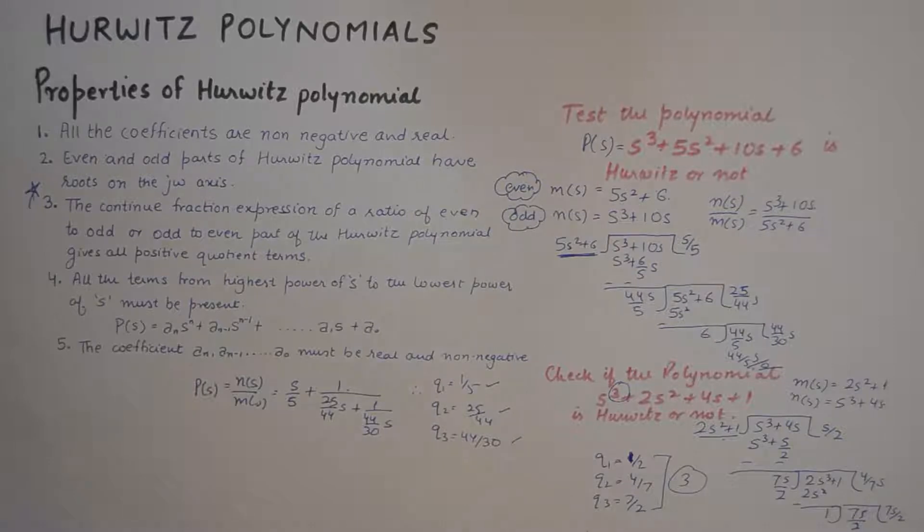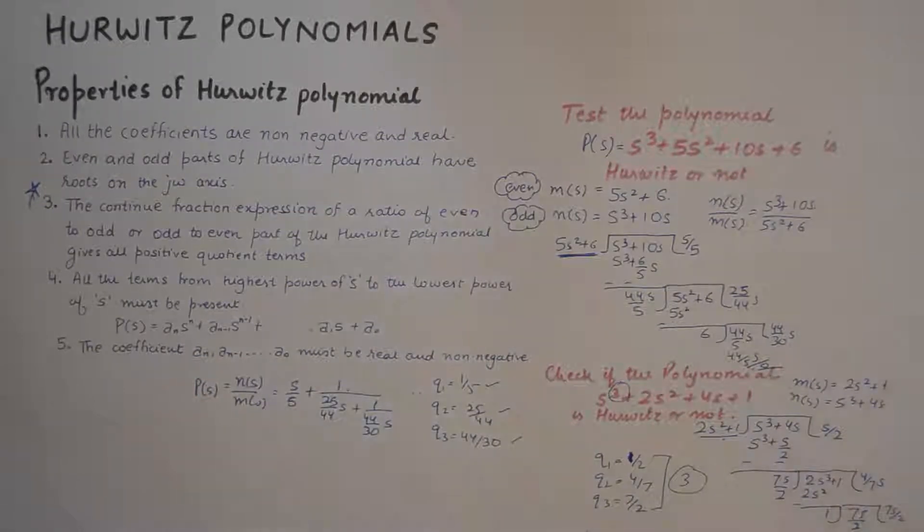So this is again a Hurwitz polynomial. And once we determine that the polynomial is a Hurwitz polynomial, we'll also say that the network function is realizable. And these were the properties of Hurwitz polynomial and the method of continued fraction expression. This method is also widely used to form Foster and Cauer forms in network synthesis. So I hope this tutorial was of help. If you liked the video, give it a thumbs up and consider subscribing to the channel. I'll see you in the next video. Take care, bye.